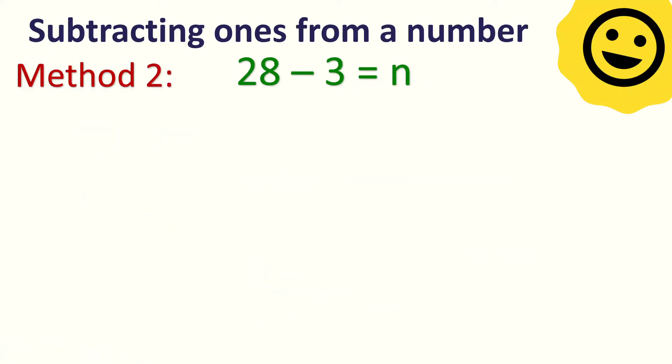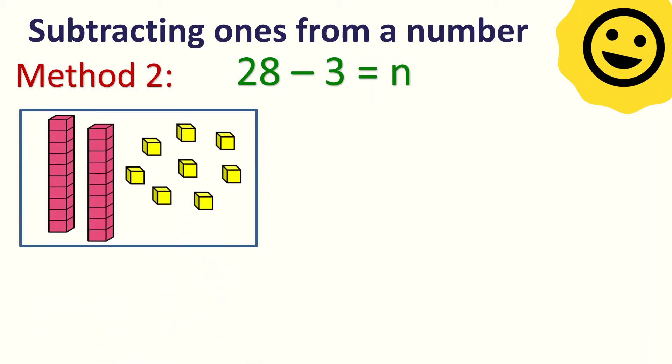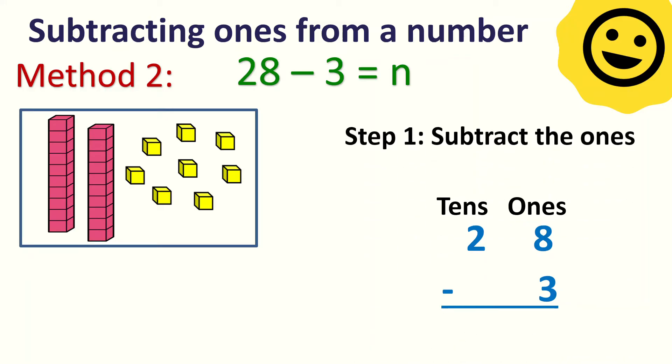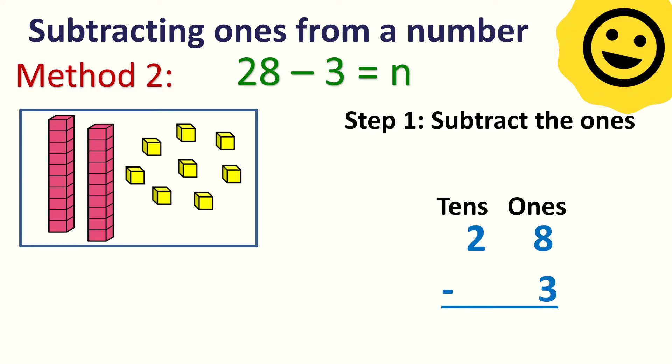Let's answer this using the second method, which is the base 10 blocks. Let's represent 28 as 2 tens and 8 ones. Let's write the subtraction sentence in vertical form. The first step is to subtract the ones — just like in addition we added the ones digit, in subtraction we subtract the ones.